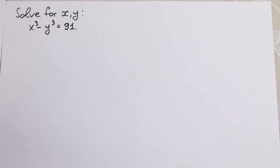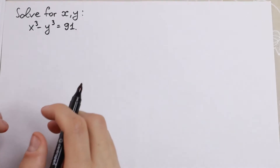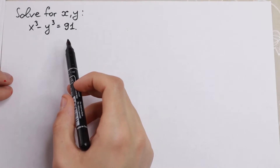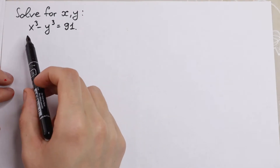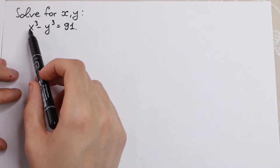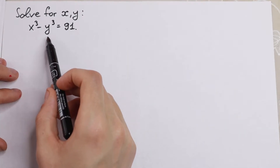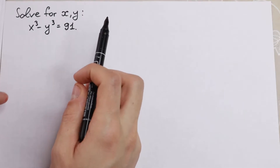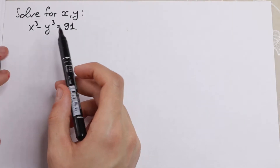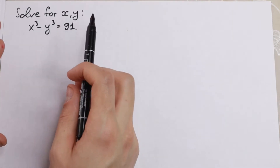Hello everyone! Welcome back to MathMode. Today we have an interesting algebra Olympiad problem: we need to find x and y, where x cubed minus y cubed equals 91.